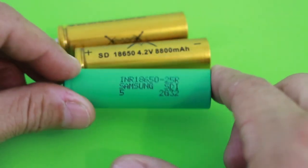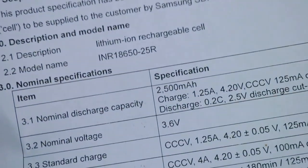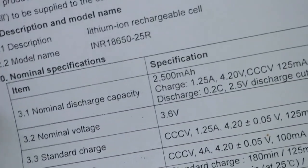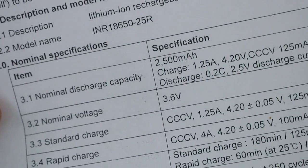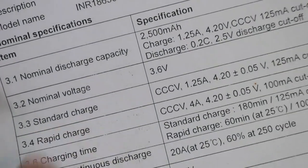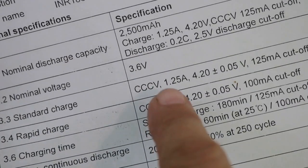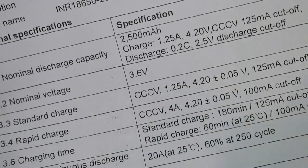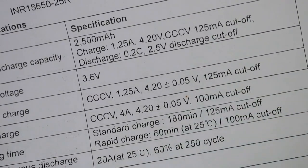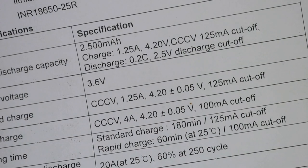This battery for example is a Samsung. I have the data sheet. We can see that it is a 2500 milliamp hours battery. The nominal voltage as we mentioned is 3.6 volts and the standard charge is constant current constant voltage at 1.25 amps 4.2 volts with a current cutoff of 125 milliamps. We now will see in detail what this means.